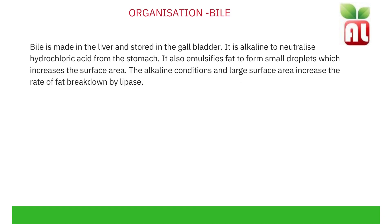Bile is made in the liver and stored in the gallbladder. It is an alkaline liquid used to neutralise hydrochloric acid from the stomach. It also emulsifies fat to form small droplets, which increase the surface area of the fat molecules. This ensures that the lipase enzyme is able to access and break down smaller molecules of lipids. The alkaline conditions and large surface area increase the rate of fat breakdown by lipase.